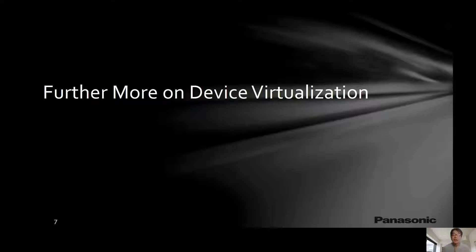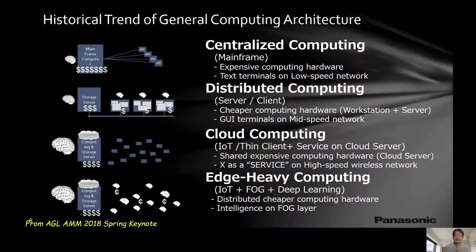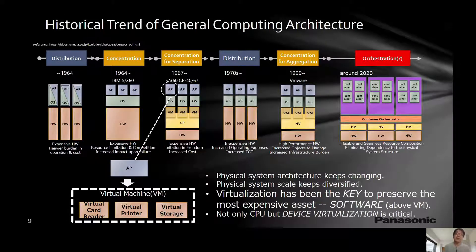Next, I would like to discuss and propose further device virtualization. I showed this slide two years ago, also at the past AMM. In the historical trend of general computing architecture, it has been going back and forth between centralization and distributed, driven by the fluctuation of the cost and performance of processing, memory, and communication. This means there is no constant optimal answer. A similar concept, focusing more on processor, hardware, and software elements: the physical architecture keeps changing and physical system scale keeps diversified, even in the same architecture.